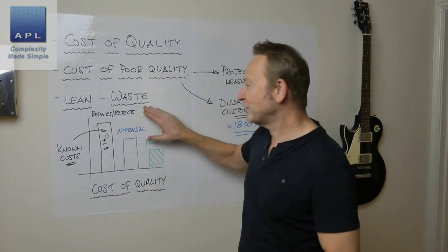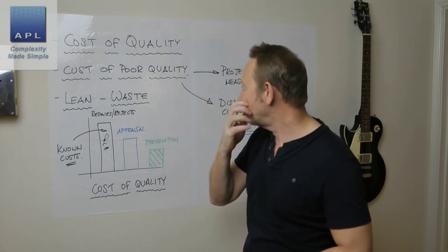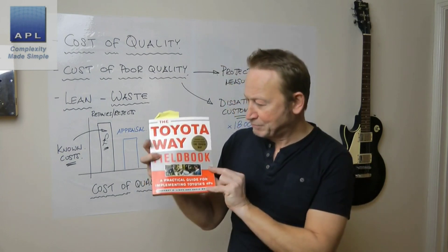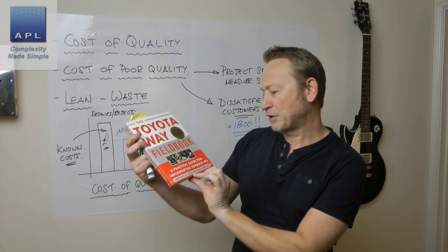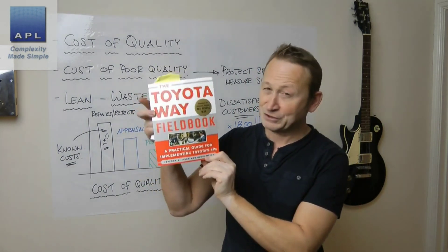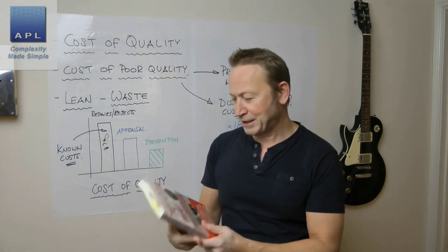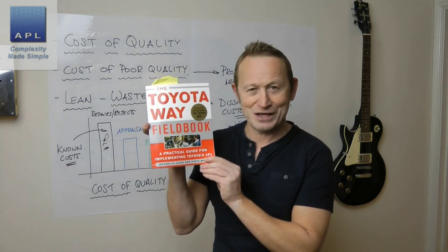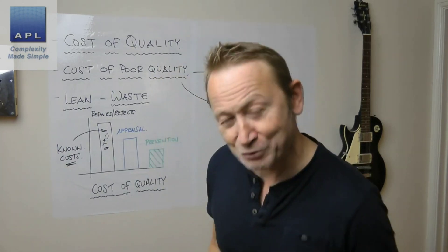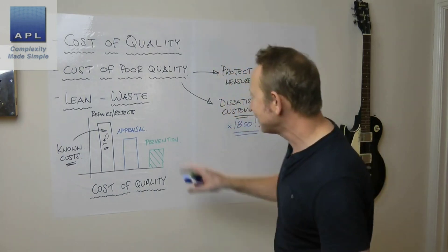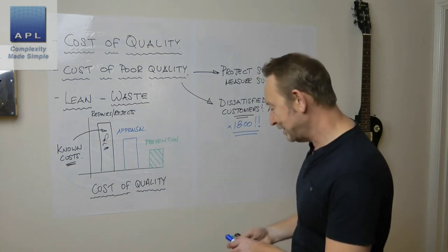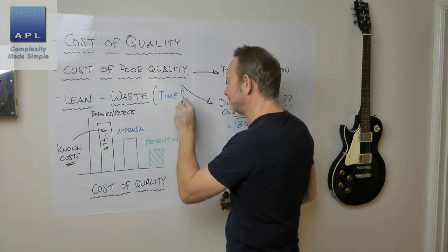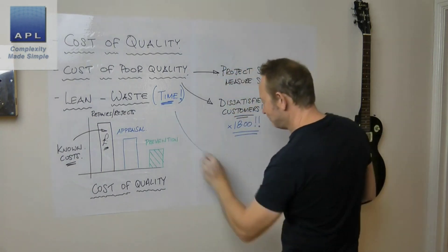One of the reasons I like lean is that it doesn't chase money. If you want advice on the best way to implement lean, I recommend the Toyota Way Fieldbook by Jeff Liker and David Meier. One of the key points in it: don't try to calculate the money you'll save from each lean implementation — if you do, you'll do the wrong things at the wrong time. Instead, chase lean waste. And lean waste is measured in time.